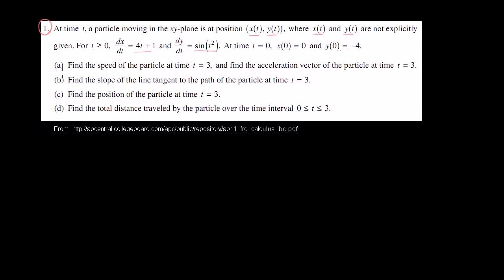Let's do part A. Find the speed of the particle at time t equals 3, and find the acceleration vector of the particle at time t equals 3 as well.